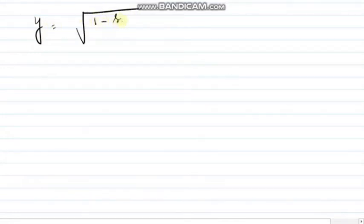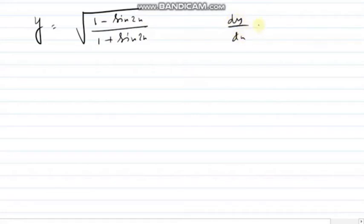Basic sum in differentiation right now. Suppose y equals root over of (1 minus sine 2x) divided by (1 plus sine 2x). We need to prove that dy/dx plus sec squared (π/4 minus x) equals 0.